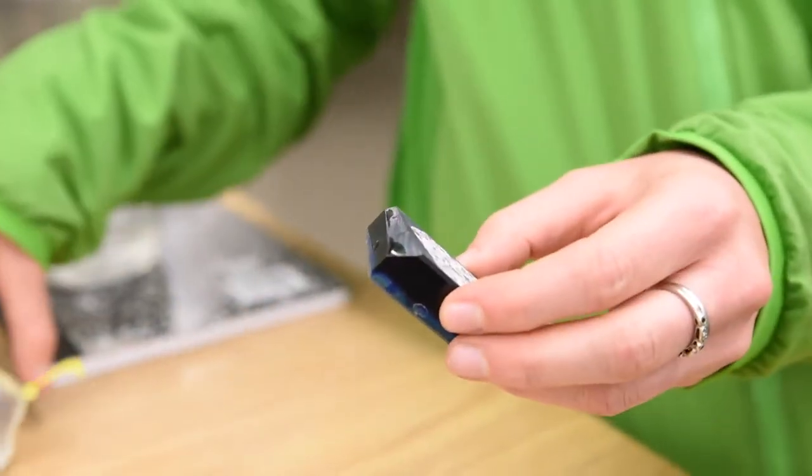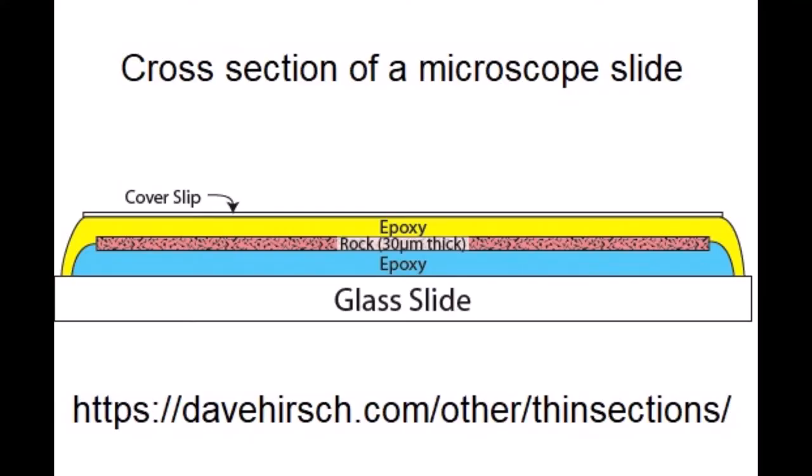After the billets are glued to the slide, they are trimmed and ground down to 0.03 mm, or 30 microns. This is the standard thickness for a thin section. If we alter the thickness of our sample, it changes the way microscope light interacts with the minerals.